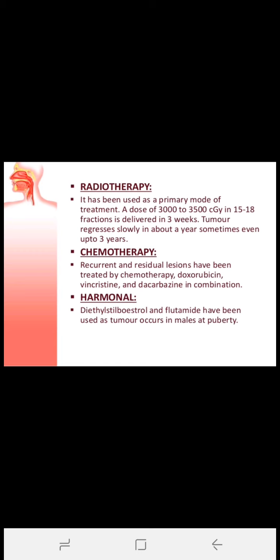Other modalities of treatment include radiotherapy, chemotherapy, and hormonal therapy. Radiotherapy has been used as a primary mode of treatment in very large or inoperable tumors — a dose of 3000 to 3500 cGy in 15 to 18 fractions delivered over three weeks; tumor regresses slowly over about a year or sometimes three years. Recurrent and residual lesions have been treated with chemotherapy using doxorubicin, vincristine, and dacarbazine in combination. Hormonal therapy using diethylstilbestrol and flutamide has also been used since the tumor occurs in males at puberty.